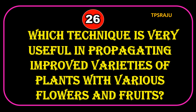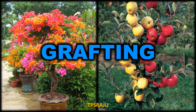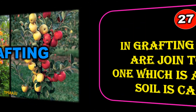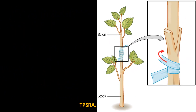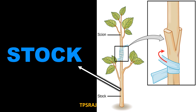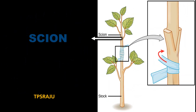Which technique is very useful in propagating improved varieties of plants with various flowers and fruits? Grafting. In grafting, two plants are joined together. The one which is attached to the soil is called the stock. The one which is without roots and attached to the stock is called the scion.